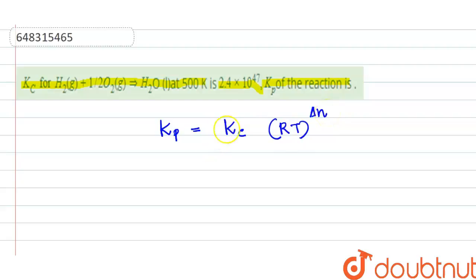Kc is given in the question, so now we have to find out delta n. What is this delta n?